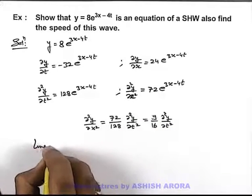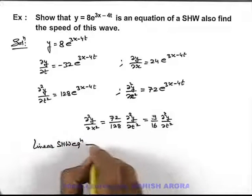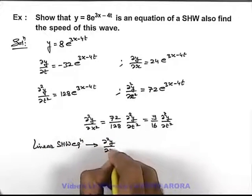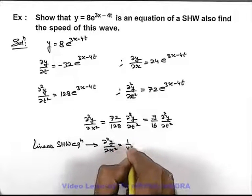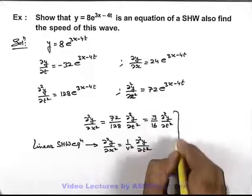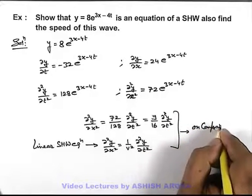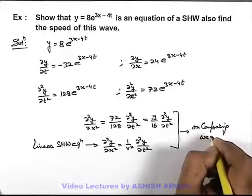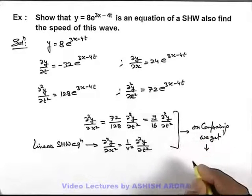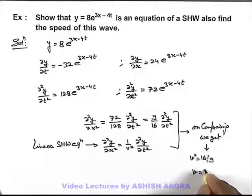And if we talk about the linear simple harmonic wave equation, which is given as ∂²y/∂x² = 1/v² × ∂²y/∂t², on comparison of these two equations, we can simply compare and get v² = 16/9, or wave speed is 4/3 meters per second, which will be the answer to this problem.